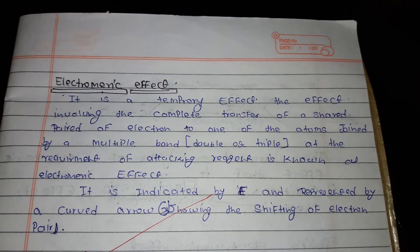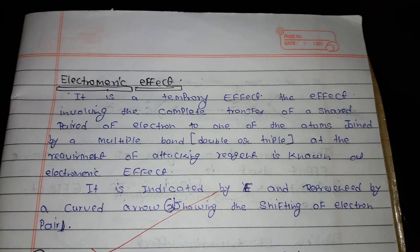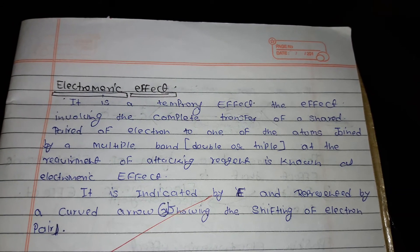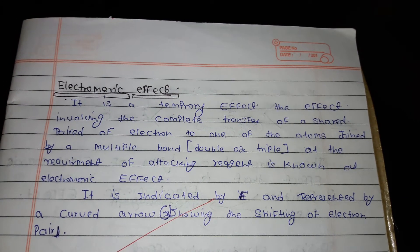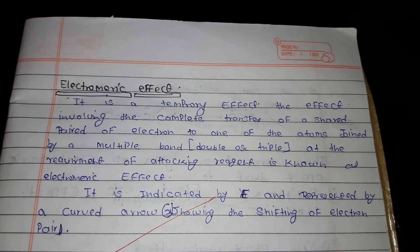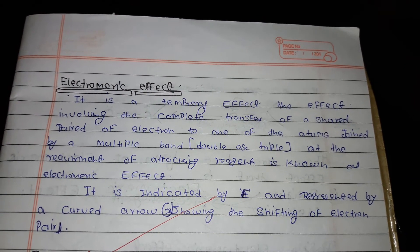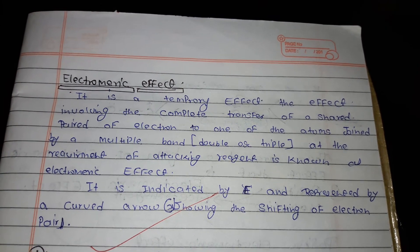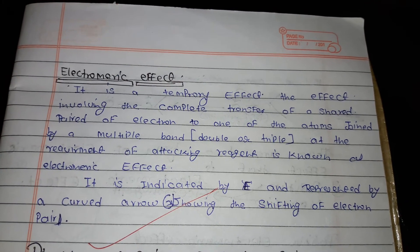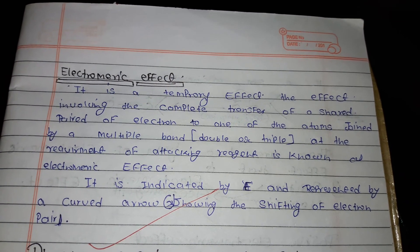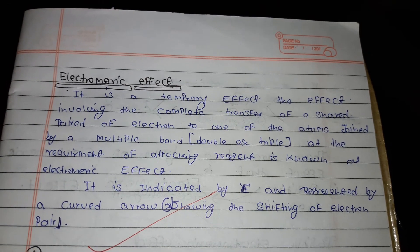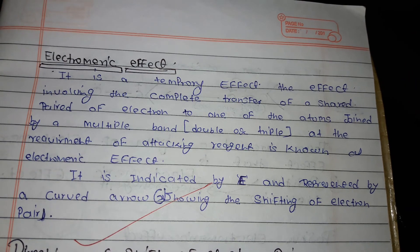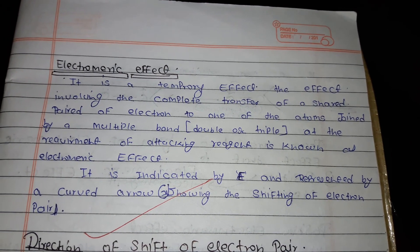Electromeric effect mein shifting of electrons hoti hai, aur complete transfer hota hai shared pair of electrons ka — one of the atom ki taraf, matlab aisa atom jo double bond, triple bond, ya multiple bond se joined ho. Jahan attacking reagent ki zaroorat hai, is poore process ko hum bolte hain electromeric effect. Isko indicate kiya jata hai E se, aur represent kiya jata hai curve arrow se, jahan shifting of electrons hoti hai.